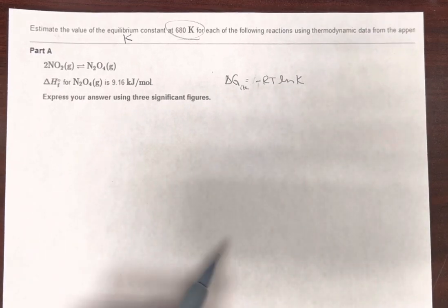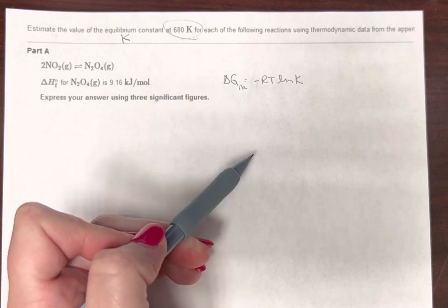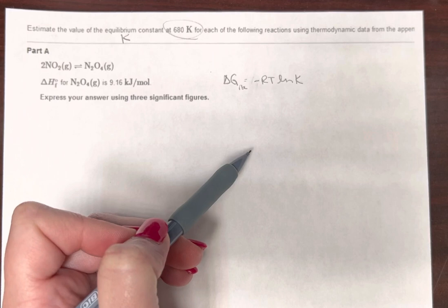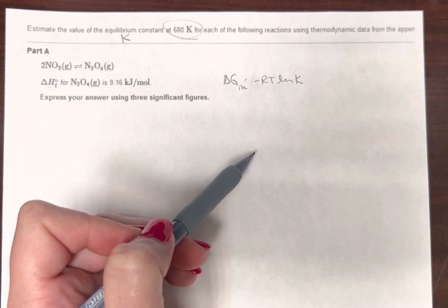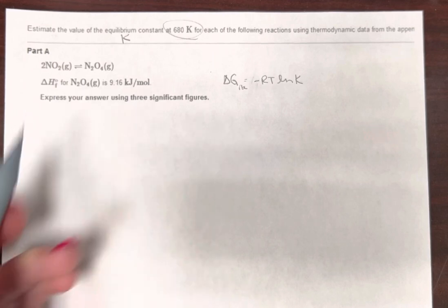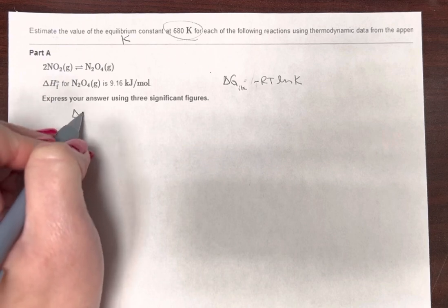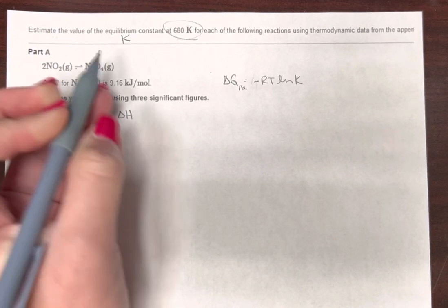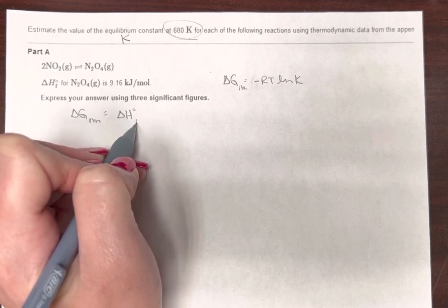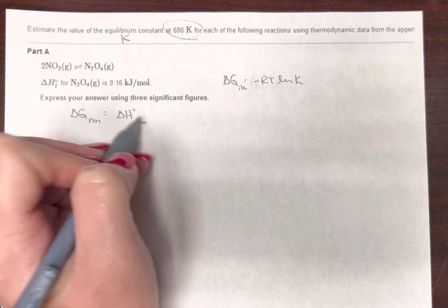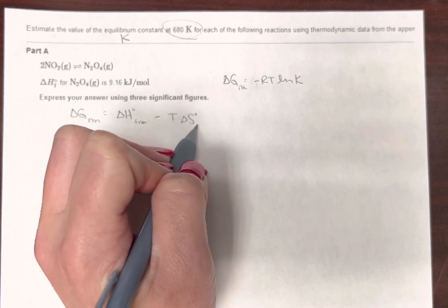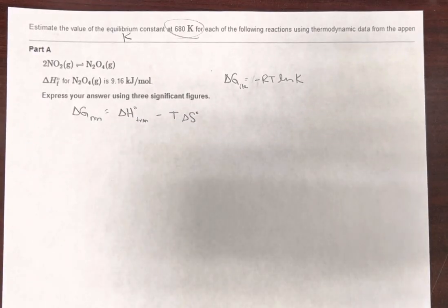Here's the deal. Notice this is at 680 Kelvin, which is not standard conditions. That means we can't use the tabulated free energies of formation in the back of the book. So we have to do delta G of the reaction equals delta H, so that can be at standard, minus T delta S. We did one of these in the practice problems.